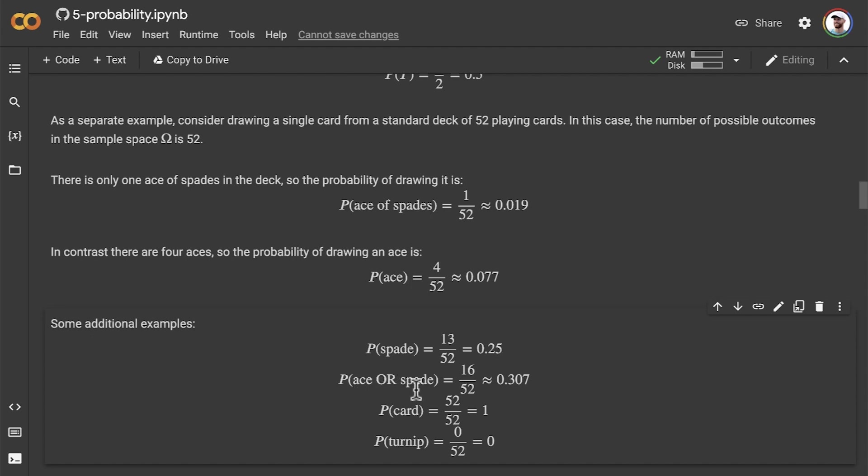What about statements like this? We don't have to limit ourselves to just one kind of definition of a card. We could say, what's the probability of drawing a card that is either an ace or a spade? Well, in that case, there are 16 cards in the deck that are either an ace or a spade. So the probability of drawing those is 16 in 52, or about 0.31, about 31%.